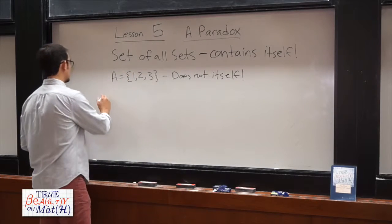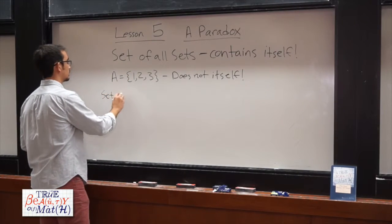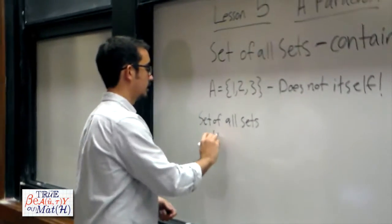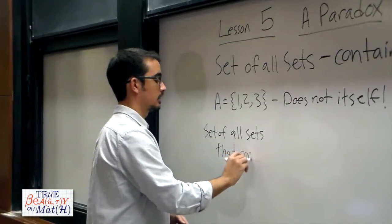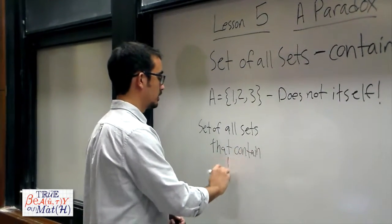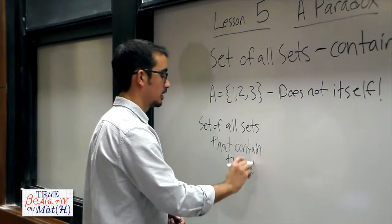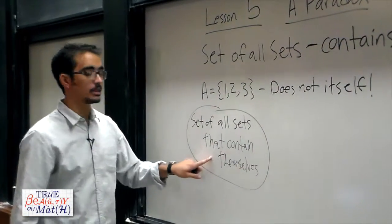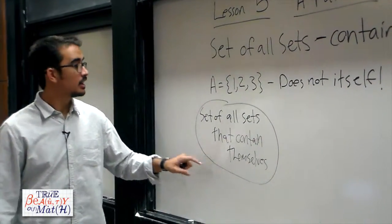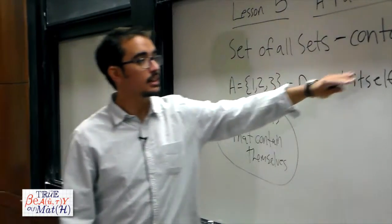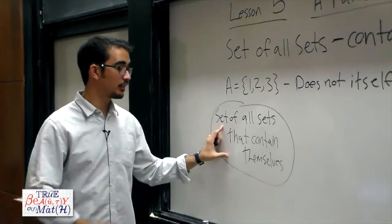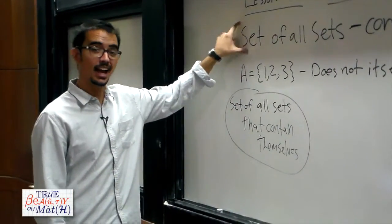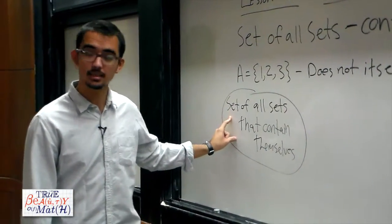Let's consider the set of all sets that contain themselves. The set of all sets would be an element of this set, because the set of all sets is a set that contains itself as an element. Therefore, the set of all sets is an element of the set of all sets that contain themselves.